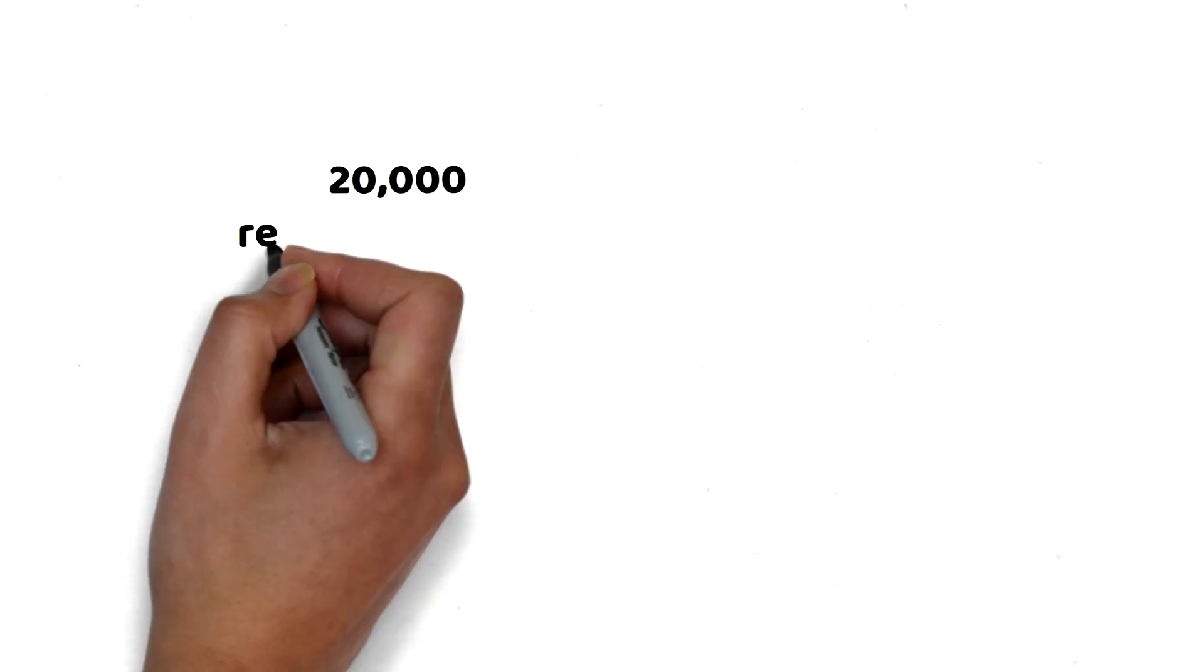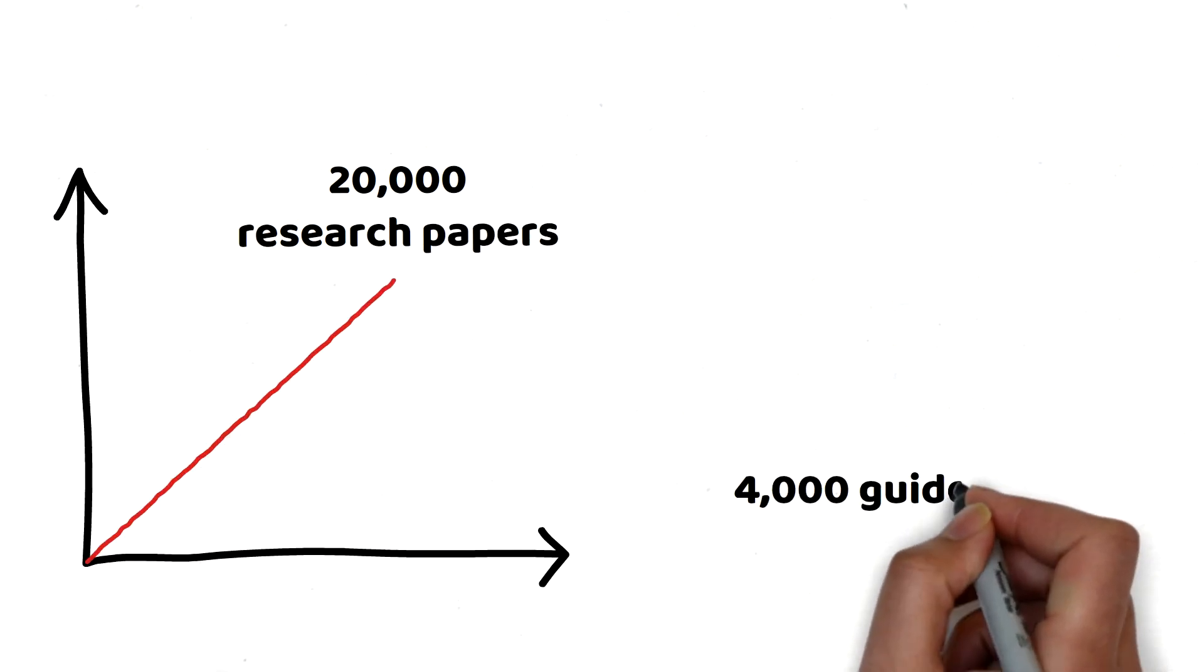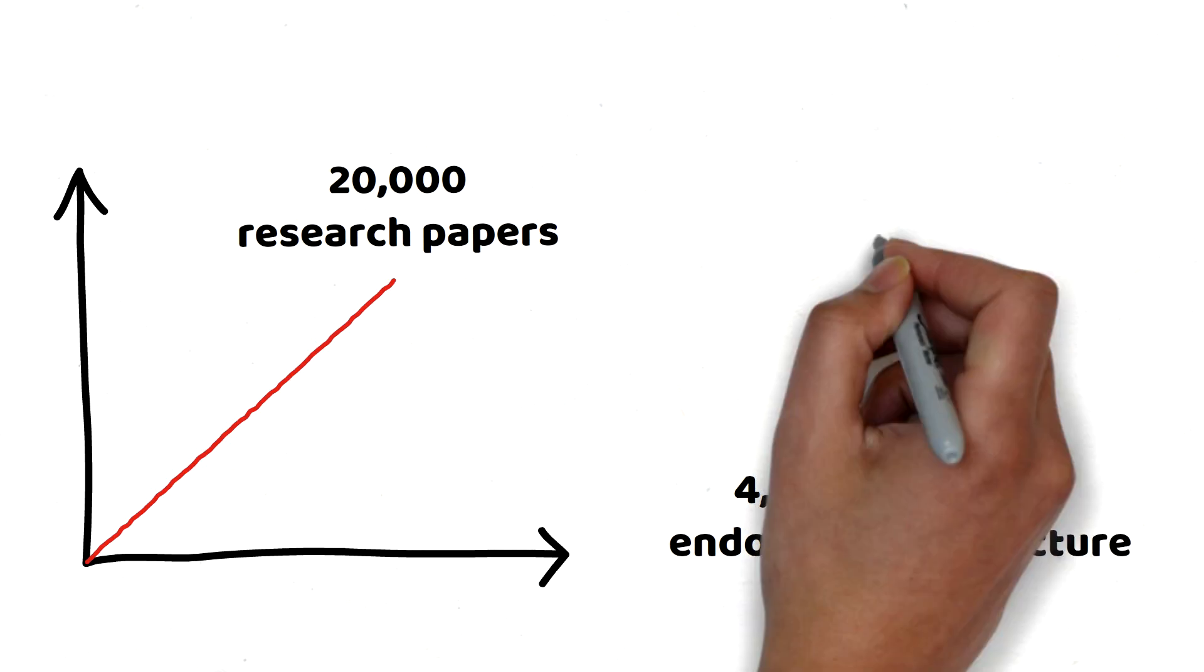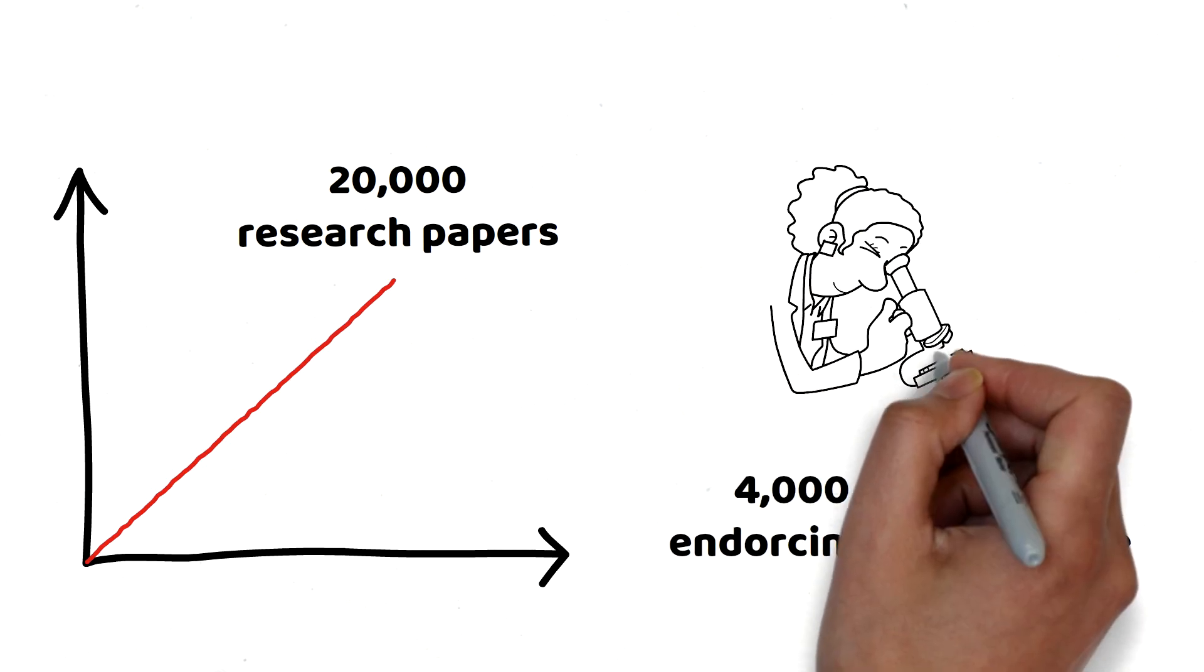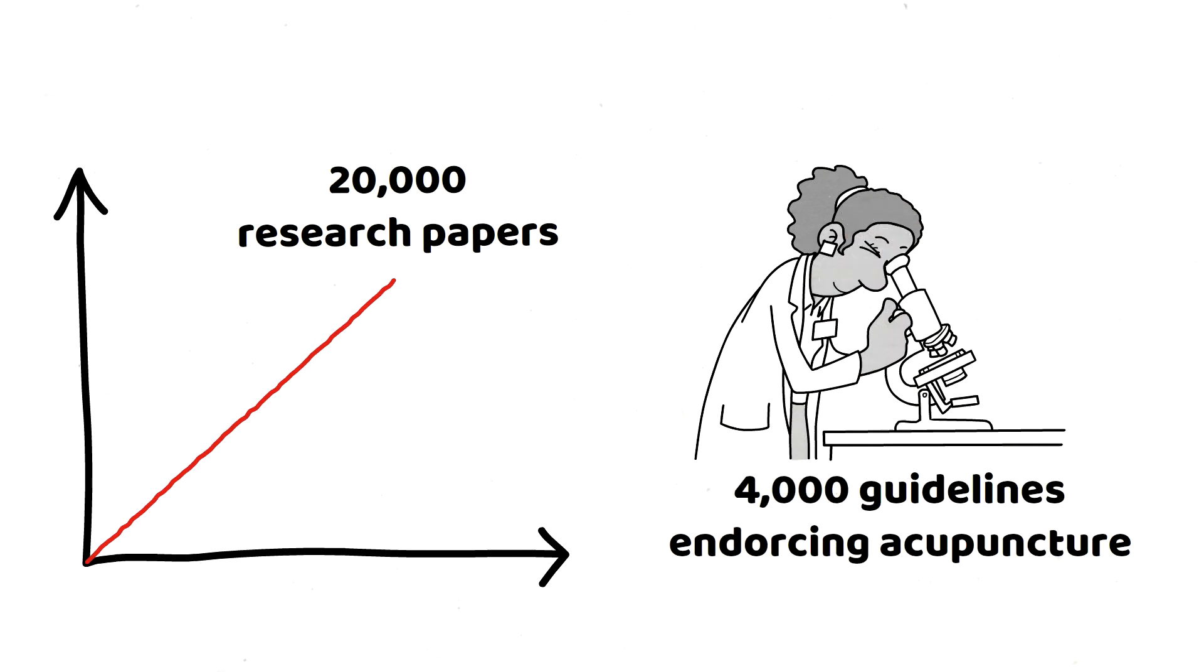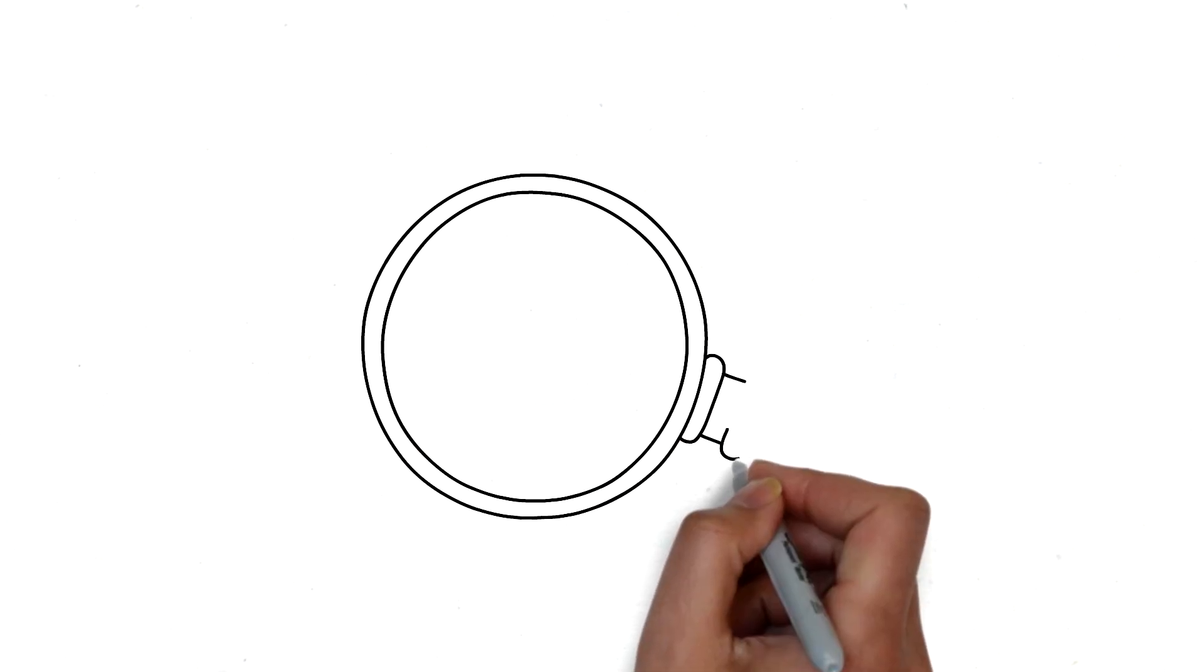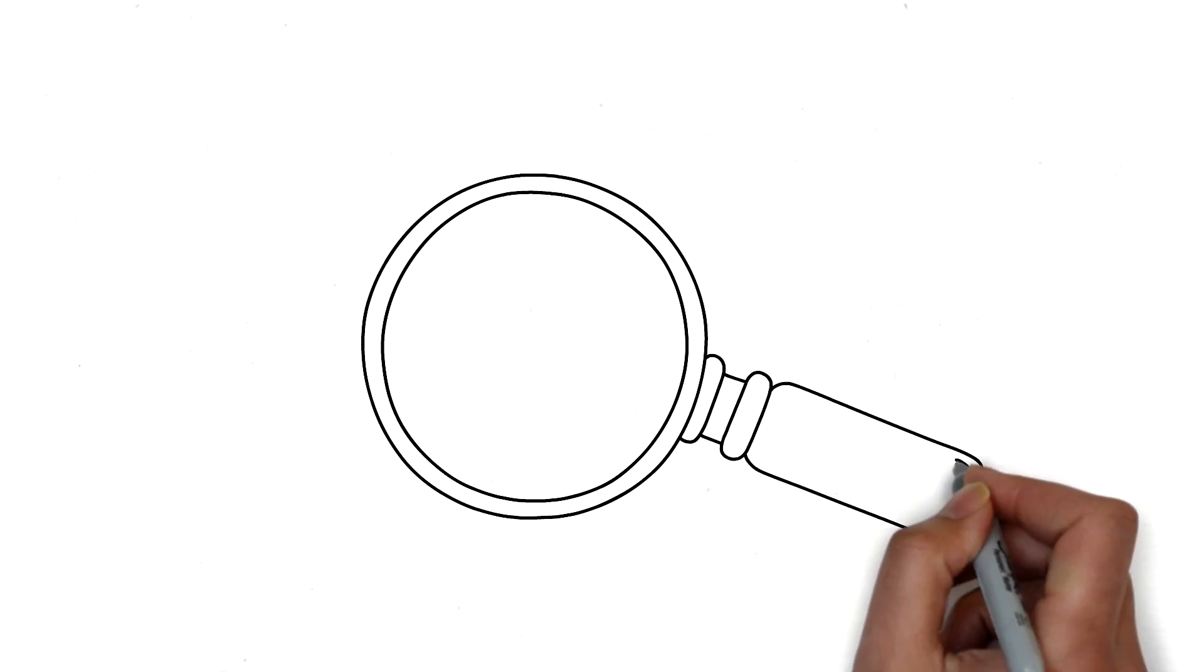With over 20,000 research papers published and 4,000 international guidelines endorsing acupuncture, the therapy has moved beyond the mystique of qi and yin-yang, standing on a robust scientific foundation backed by extensive empirical evidence. So, let's explore some key scientific principles that underlie acupuncture's effectiveness.